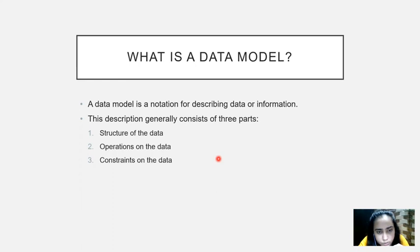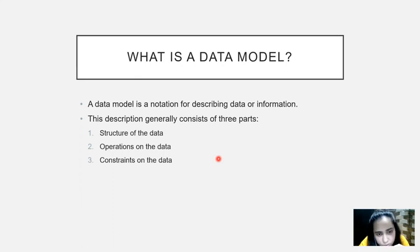And operations on the data — what kind of operations can be performed on that data? For example, whether you can insert, update, or delete the data, or you can just view the data. And lastly, constraints on the data. Constraints are a set of rules and regulations that are applied to the data in order to make it more authentic and consistent.